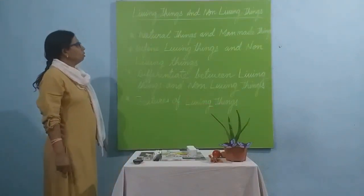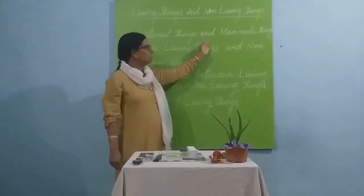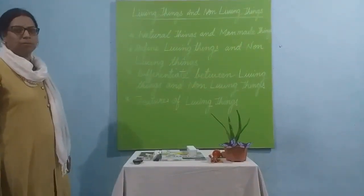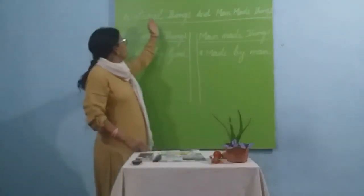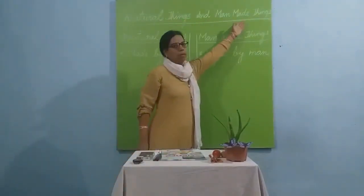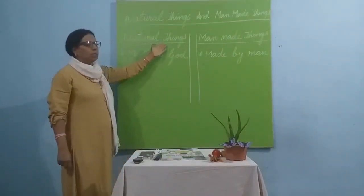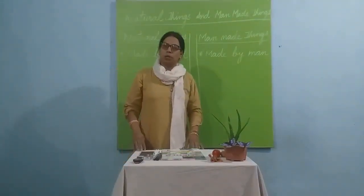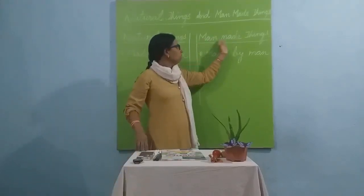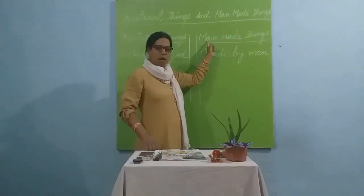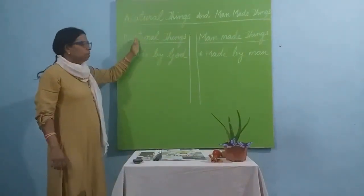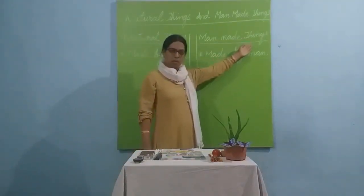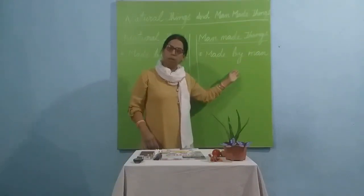Today we are going to discuss natural things and man-made things. Natural things are the things which are made by God, and man-made things, as the name suggests, are made by man or human beings.